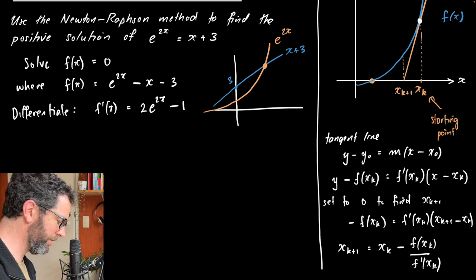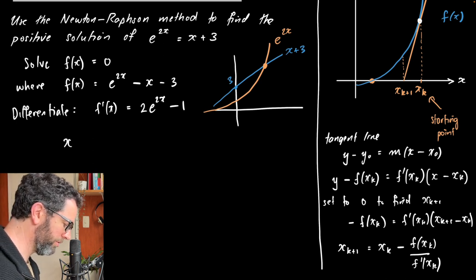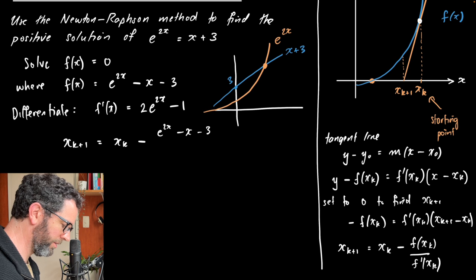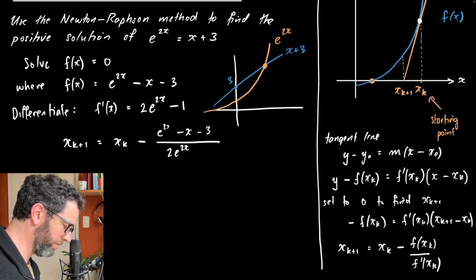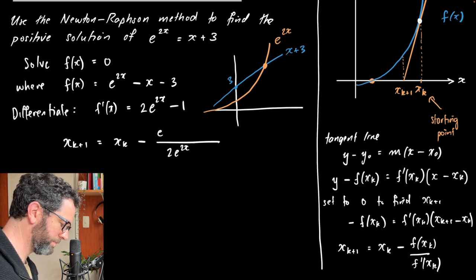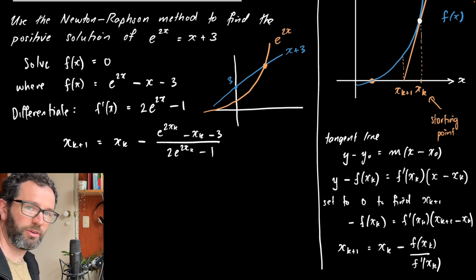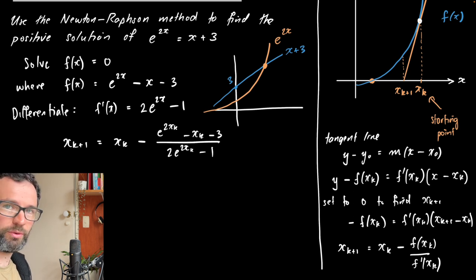Okay, and so that means our update formula, if we just copy it from over there, is going to be xk plus 1 equals xk minus, now our function, e to the 2x minus x minus 3, divided by our derivative, 2 e to the 2x. And there should be xk, sorry. Try that again. e to the 2xk minus xk minus 3, over 2 e to the 2xk minus 1. And what should happen, so long as we start in the right place, this should quite quickly approach the answer that we want.